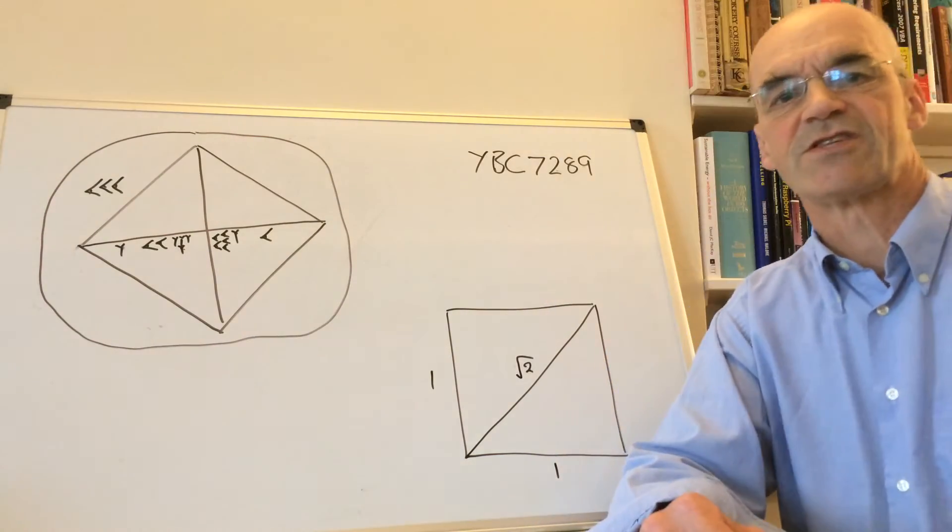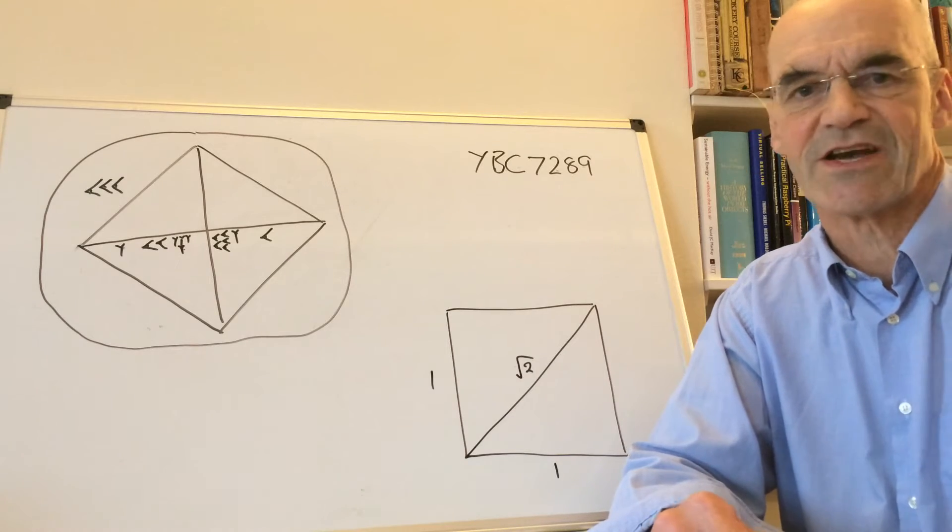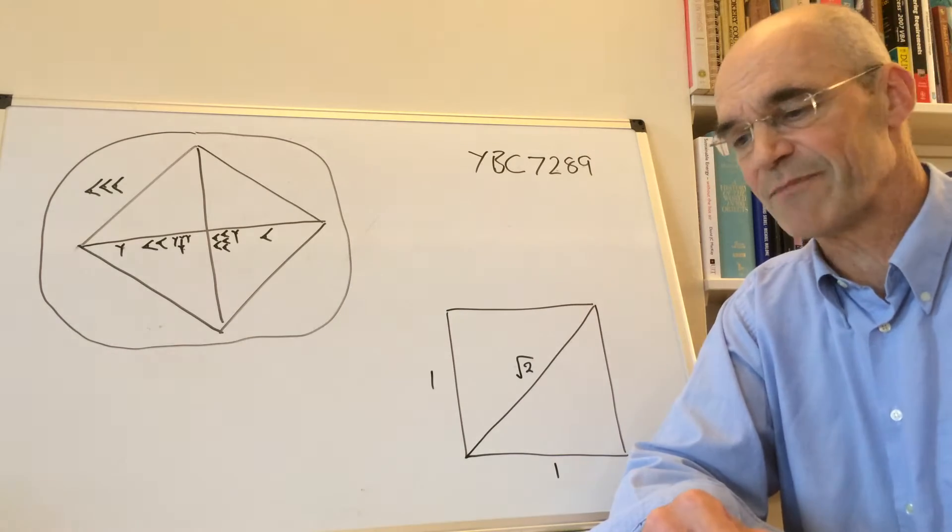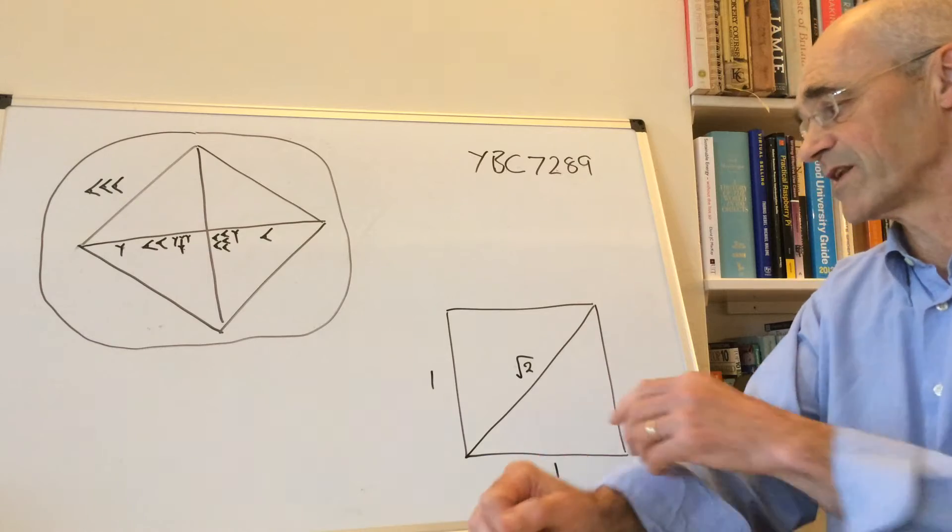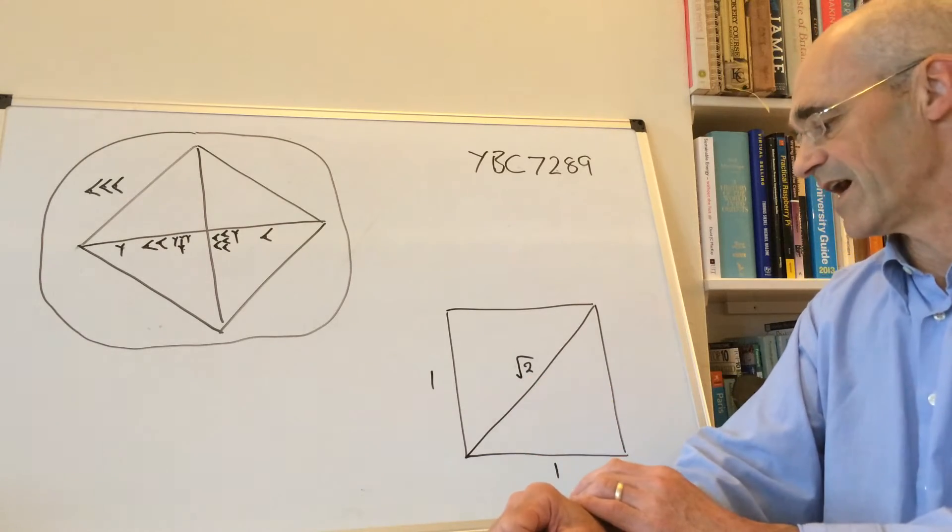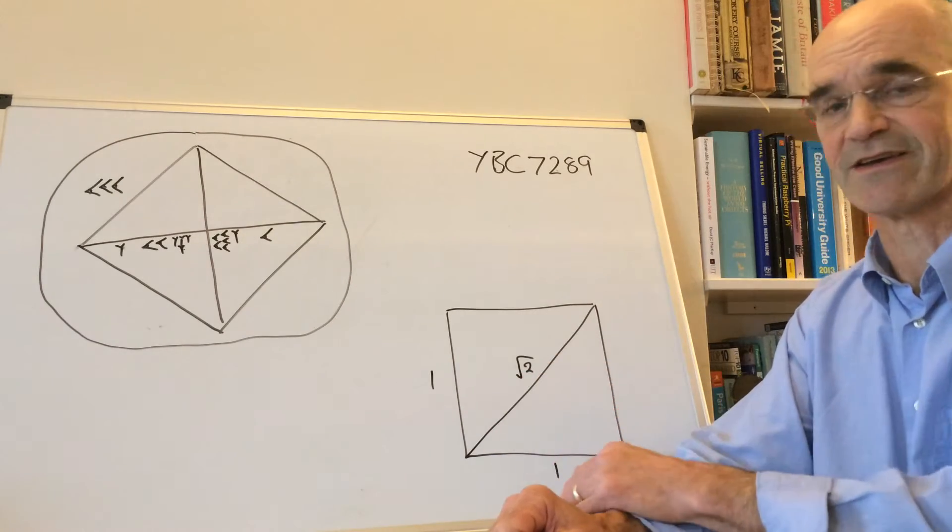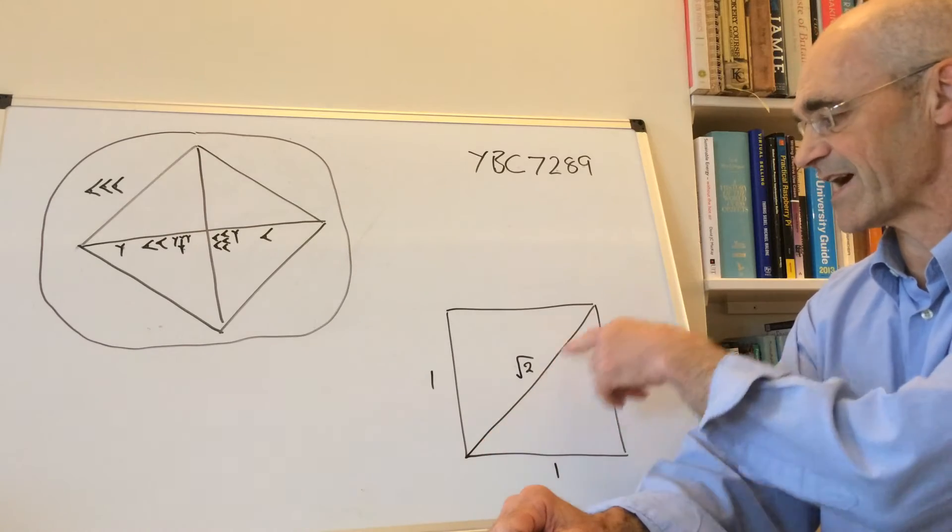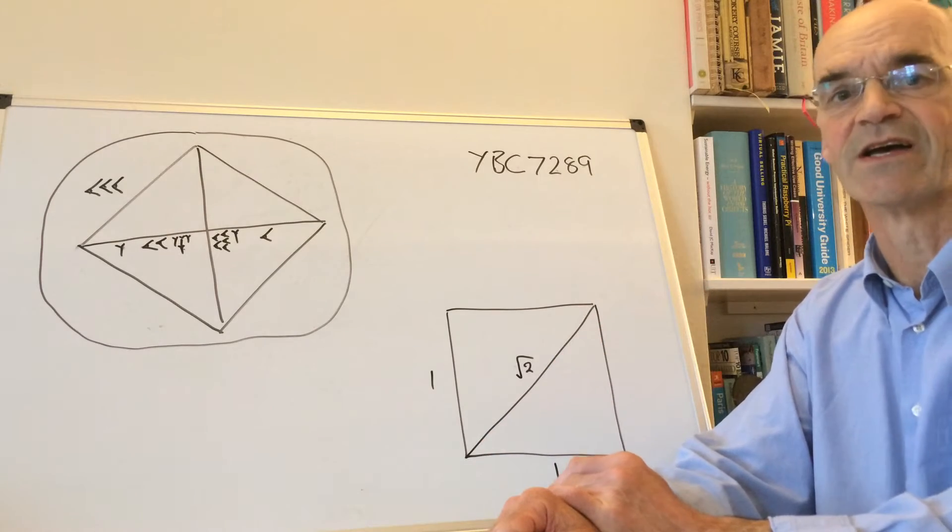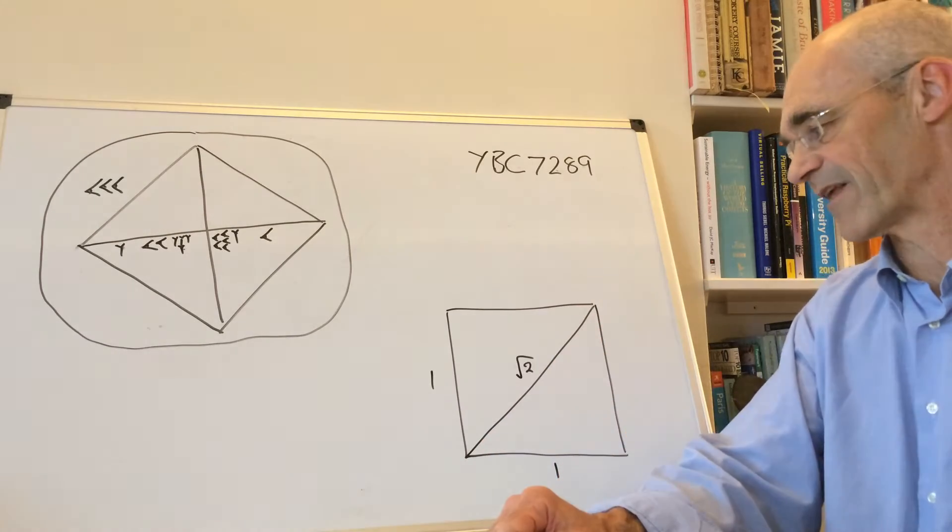This video is about the square root of 2, which has been known about for a long time, partly because it arises naturally from geometry. If you look at a square of side 1, the diagonal of that square is root 2, and the Greek mathematicians knew all about that.